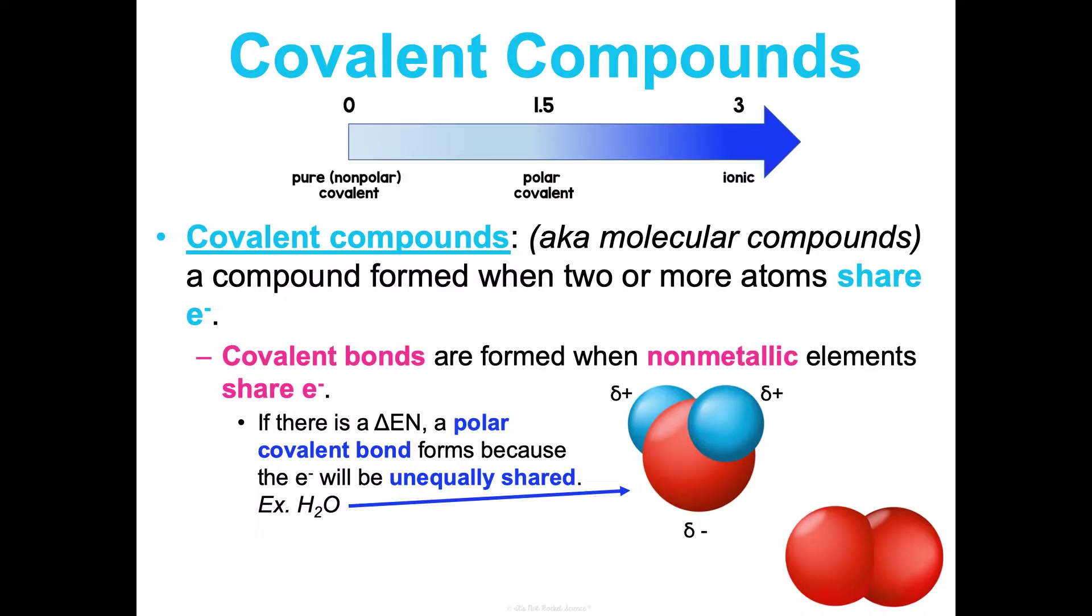For example, look at water right here: two hydrogens, these blue atoms, and one oxygen. Oxygen has a higher electronegativity than hydrogen, so oxygen is going to pull the electrons a little bit more. We use these little deltas, positive and negative, to indicate the partial charges, the poles within this compound. Overall this molecule is neutral; it's not an ionic compound. It just means this side is a little bit more positive and this side is a little bit more negative.